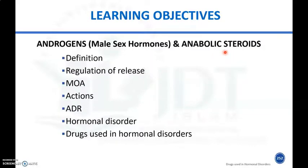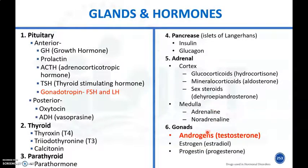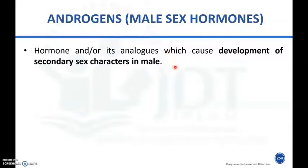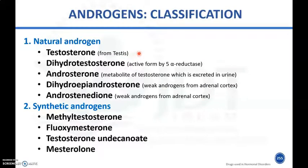Androgens or testosterone are hormones secreted by the gonads or reproductive glands in males, under the influence of FSH and LH, which are gonadotropins secreted from the anterior pituitary. Androgens are also known as male sex hormones and can be defined as hormones or their analogues which cause the development of secondary sex characters in males.